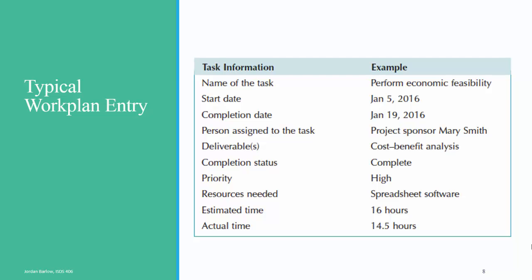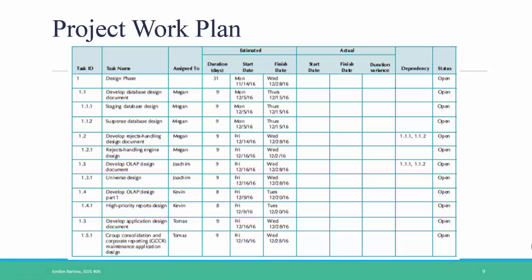A typical entry in a project work plan includes the name of the task, start and finish dates, who is assigned to the task, any deliverables associated with it, whether the task has been completed, its priority, any resources needed, and estimated and actual time spent on it. When completed, a project work plan looks something like this — each task is listed on a row of a spreadsheet, with those characteristics listed across the various columns. Project management software is the best tool to use, and a project work plan like this can be created very easily using Microsoft Project. However, for your homework this week, you can use Excel or Word.